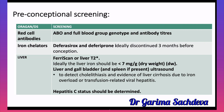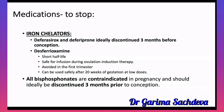The medications to stop are deferasirox and deferiprone, which should be stopped three months before pregnancy. Desferrioxamine has a short half-life; it is safe during ovulation induction or when planning for pregnancy, should be avoided in the first trimester, and can be used after 20 weeks at low doses. All bisphosphonates are contraindicated in pregnancy and should be discontinued three months prior to conception.